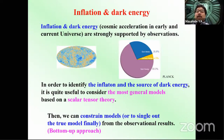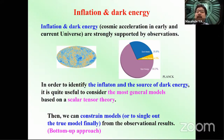As you know, inflation and dark energy — that is, cosmic acceleration in the early and current universe — are strongly supported by observations like the cosmic microwave background, supernovae, BAO, and other signals. The next question is: to identify the inflaton and the source of dark energy, it is quite useful to consider the most general models possible based on scalar-tensor theory. Once we have such a general model, we can constrain models or single out the true model from observational results. This approach is called bottom-up.